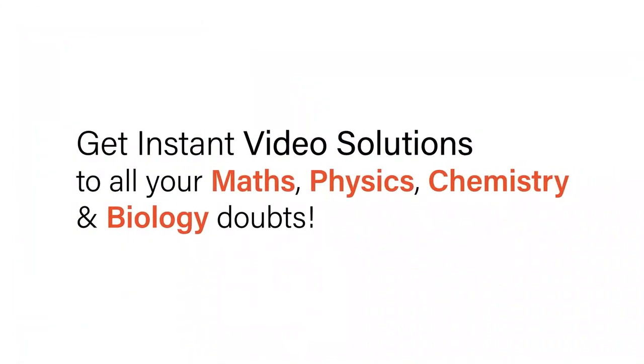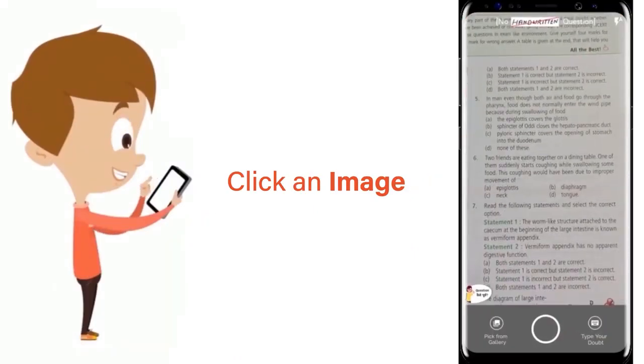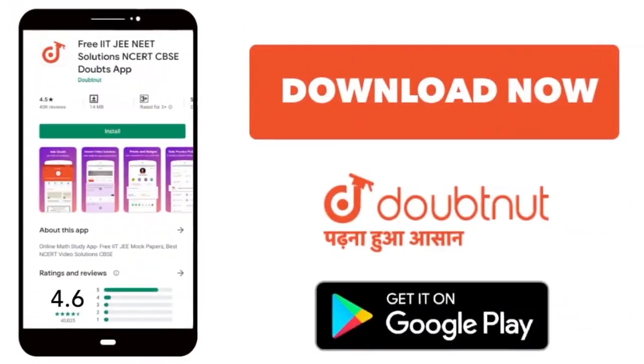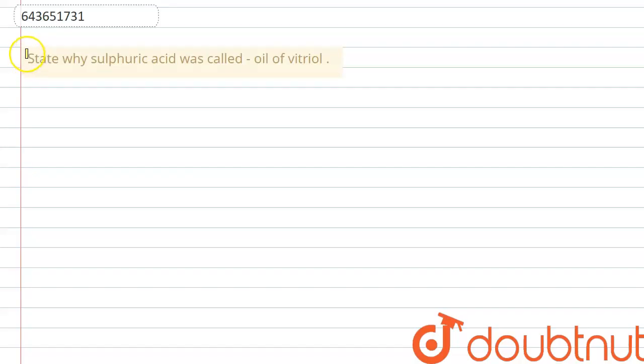With Doubtnet, get instant video solutions to all your maths, physics, chemistry, and biology doubts. Just click the image of the question, crop the question, and get instant video solution. Download Doubtnet app today. Hello everyone, let's start the given question. It says state why sulfuric acid was called oil of vitriol.